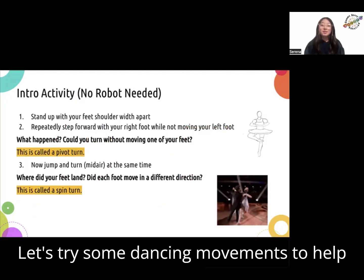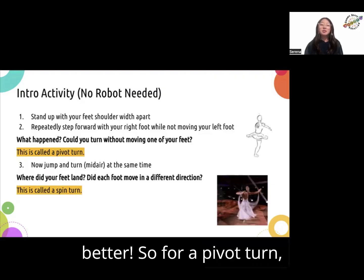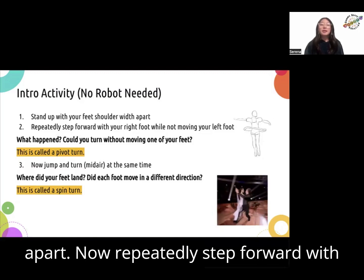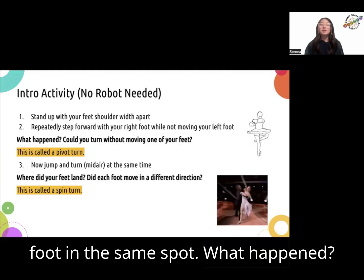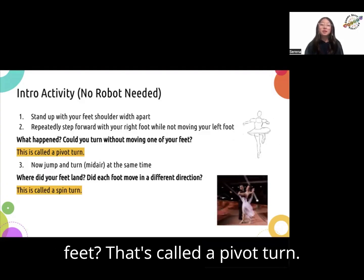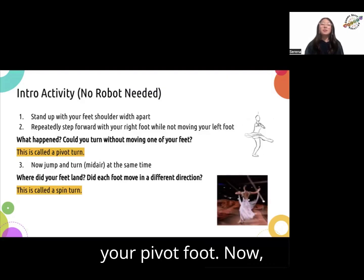Let's try some dancing movements to help us understand these two types of turns better. For a pivot turn, stand up with your feet shoulder-width apart. Now repeatedly step forward with your right foot while keeping your left foot in the same spot. Did you turn without moving one of your feet? That's called a pivot turn — you stayed in one spot and turned around your pivot foot.